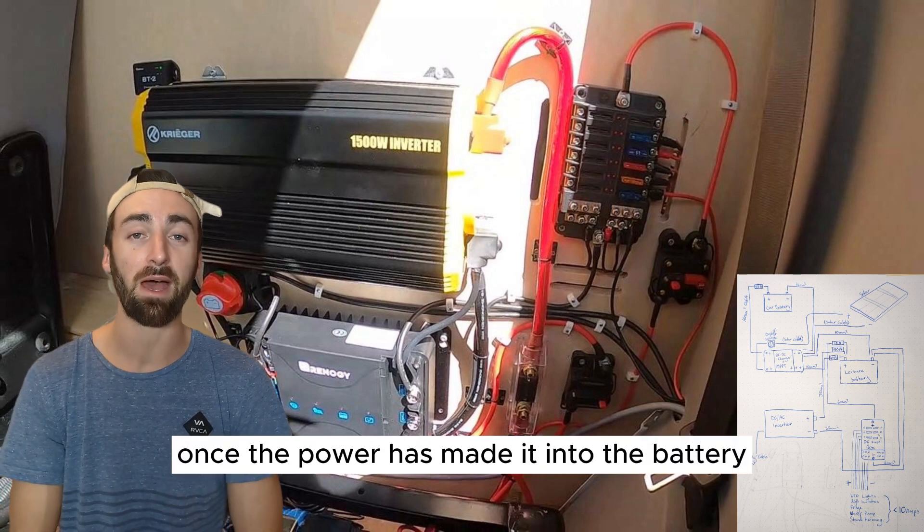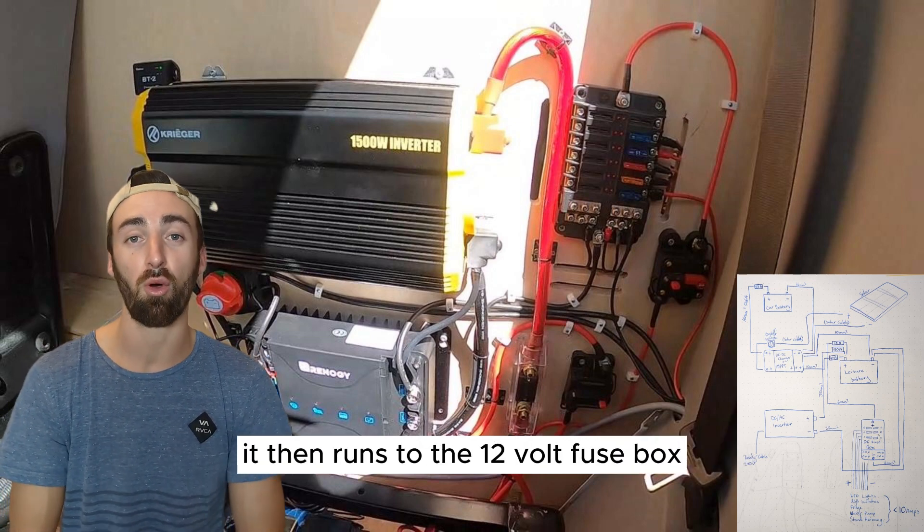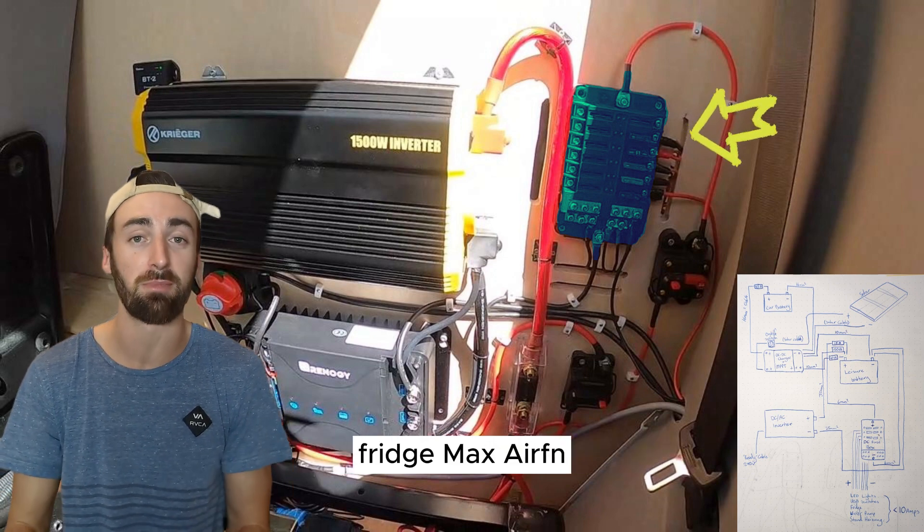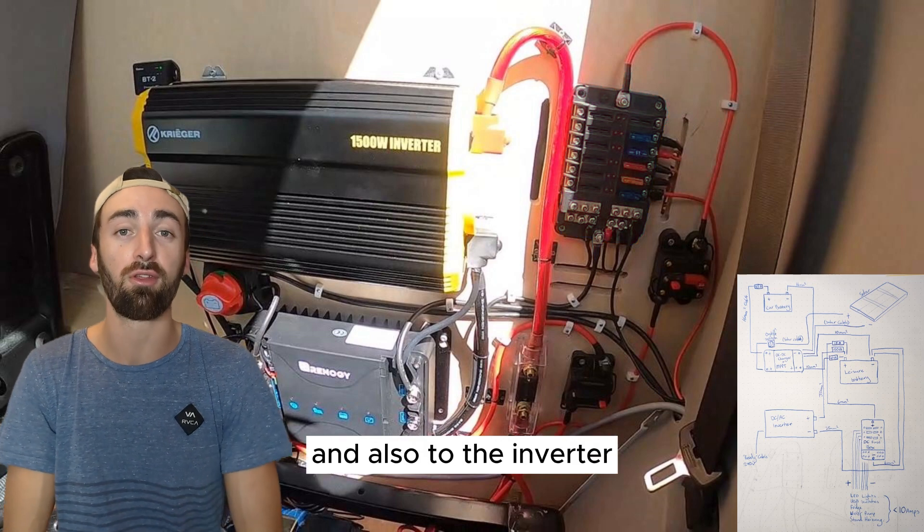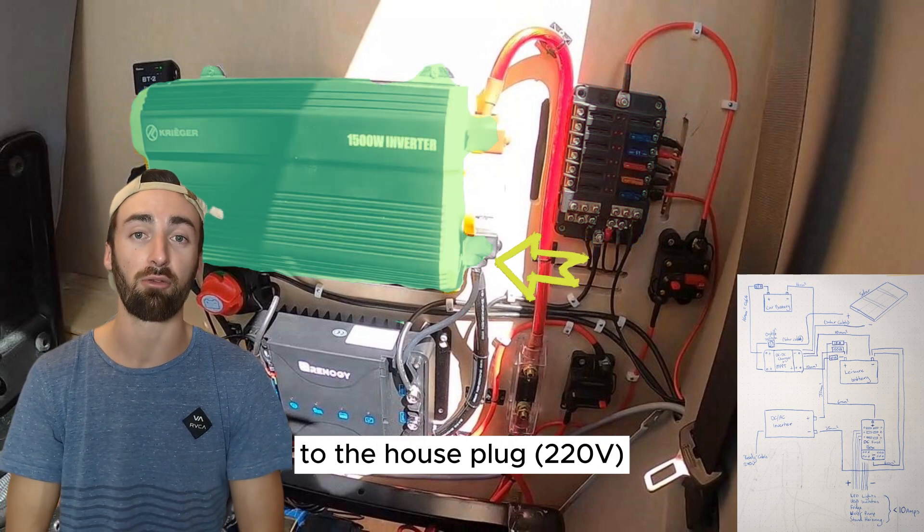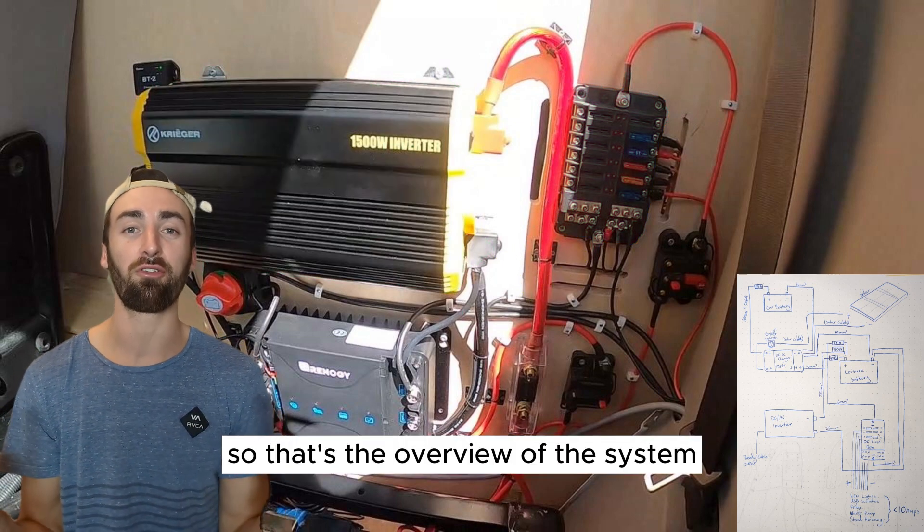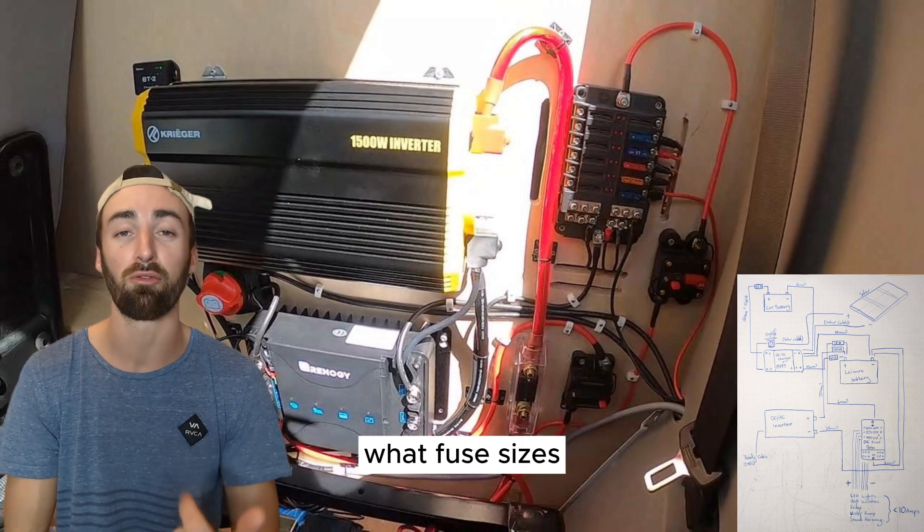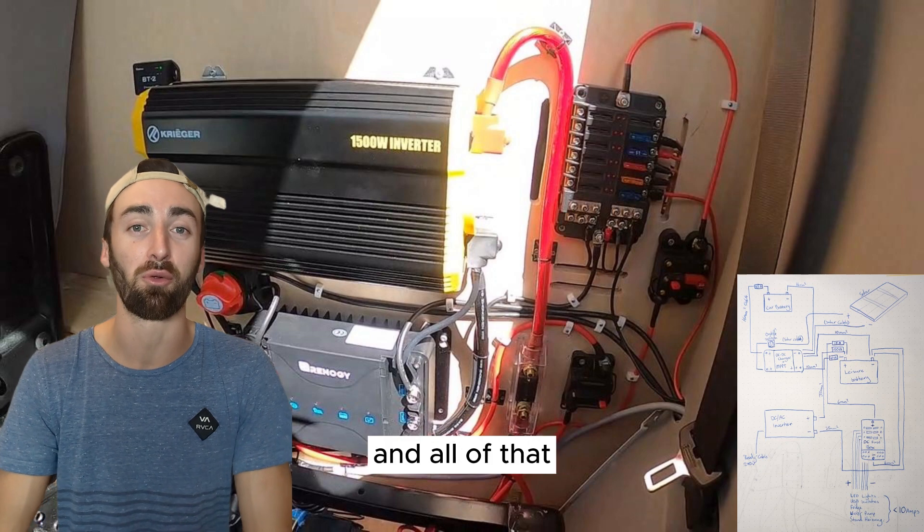Once the power has made it into the battery it then runs to the 12 volt fuse box running out to all of the lights, fridge, max air fan, all of those things and also to the inverter to the house plug. So that's the overview of the system now I'll dive into the specifics of what cable sizes I use, what fuse sizes, circuit breakers and all of that.